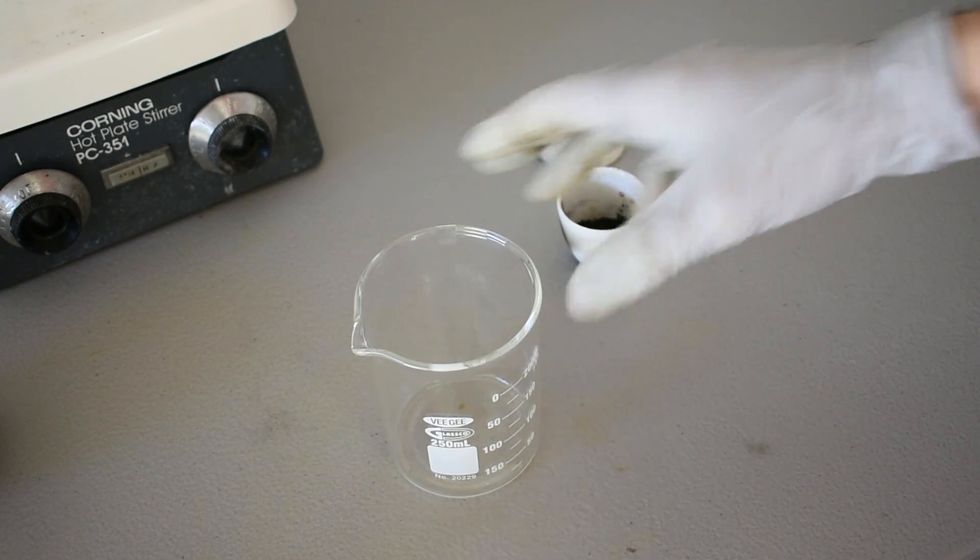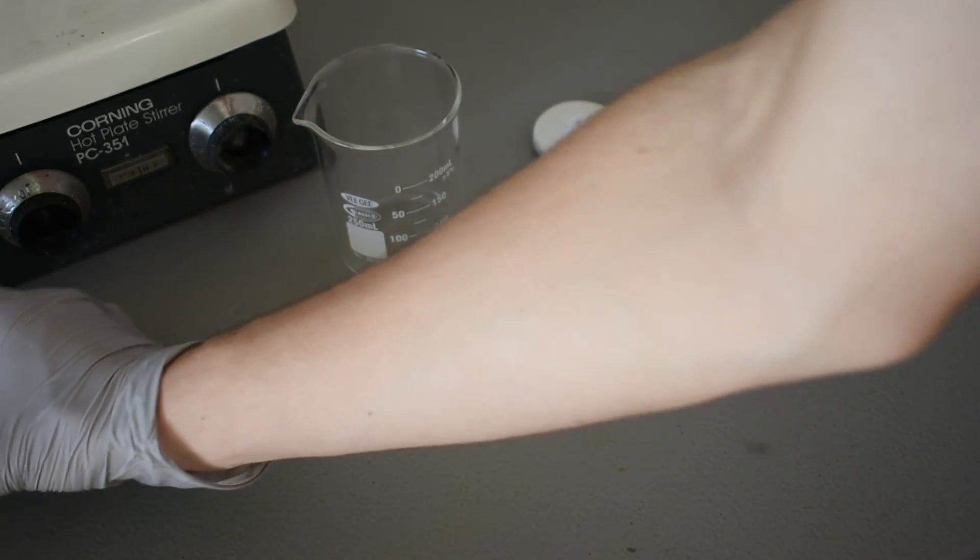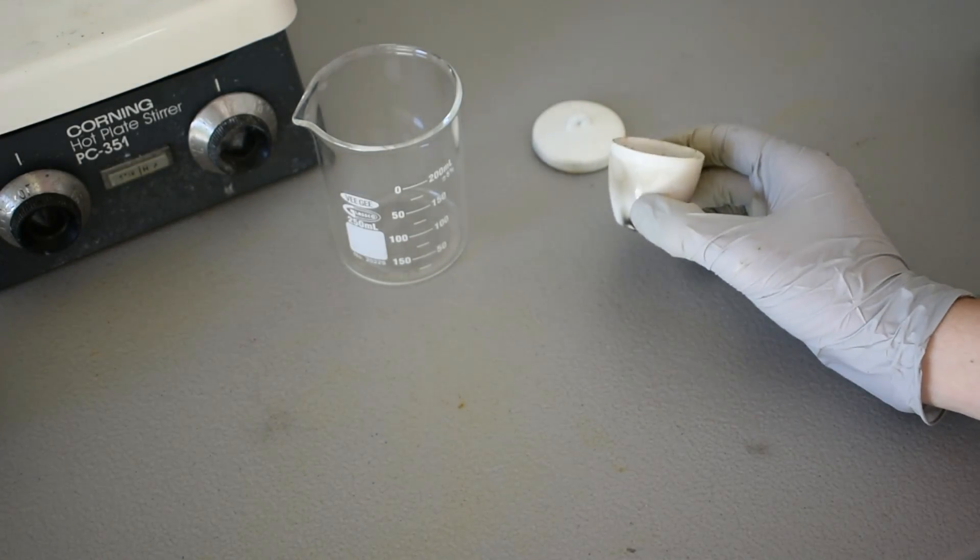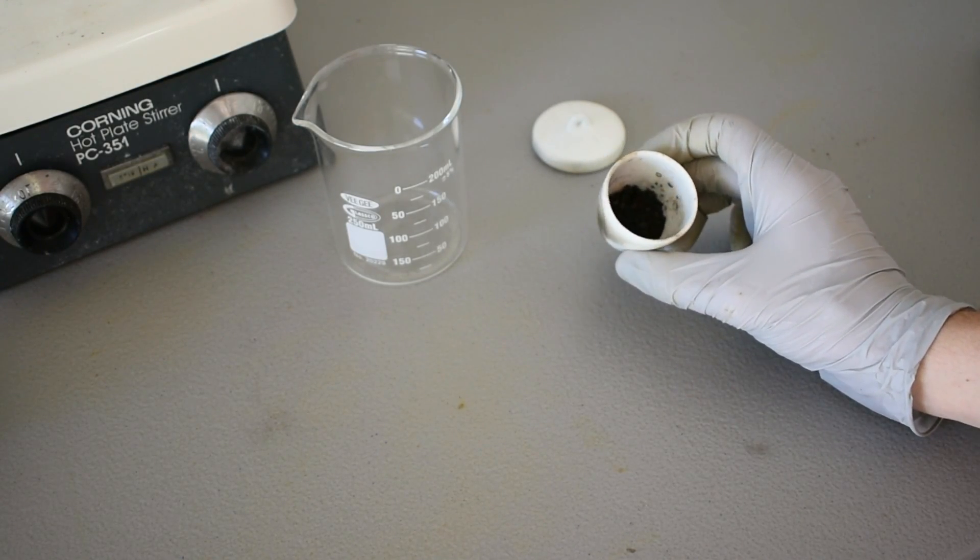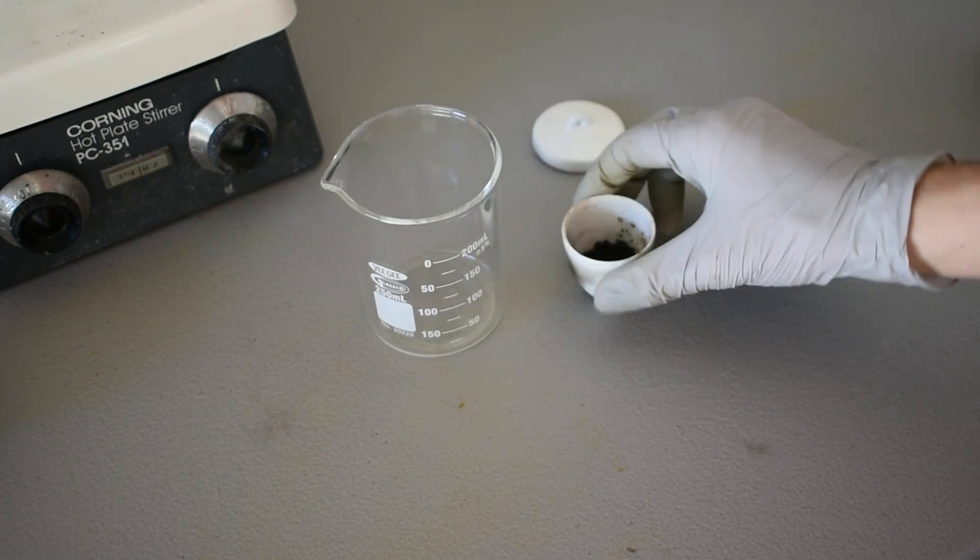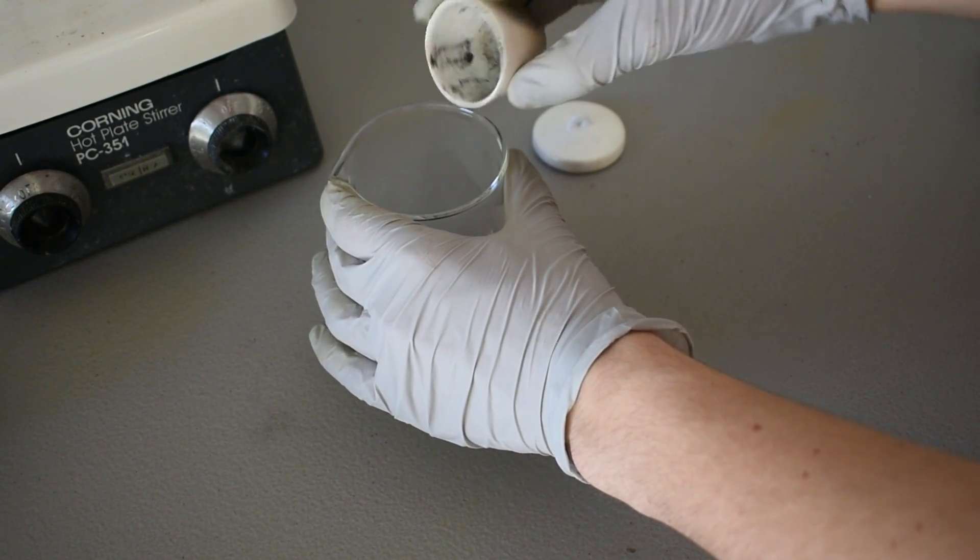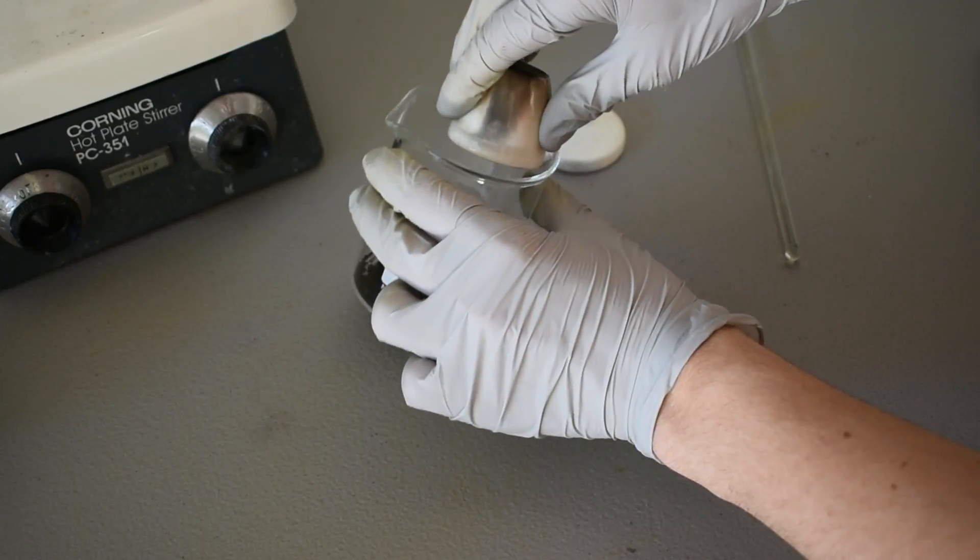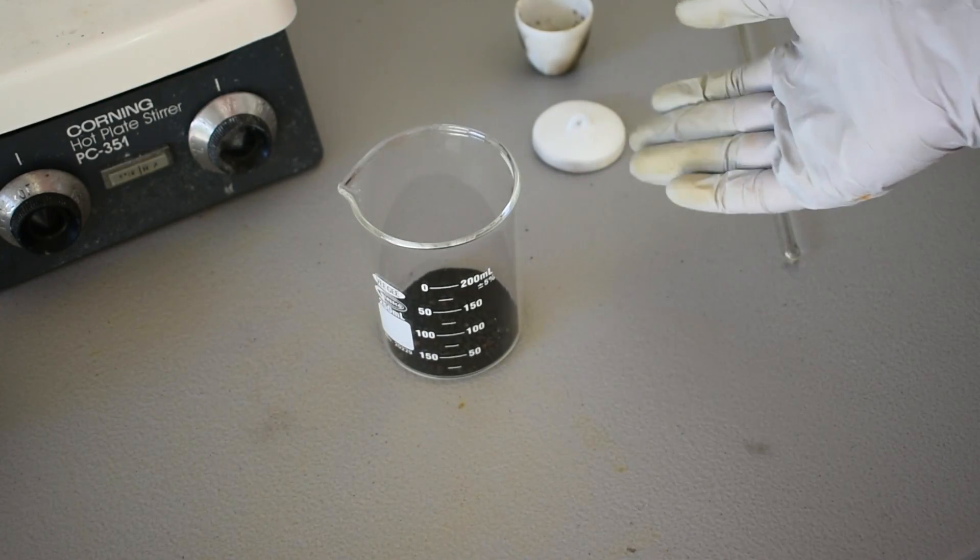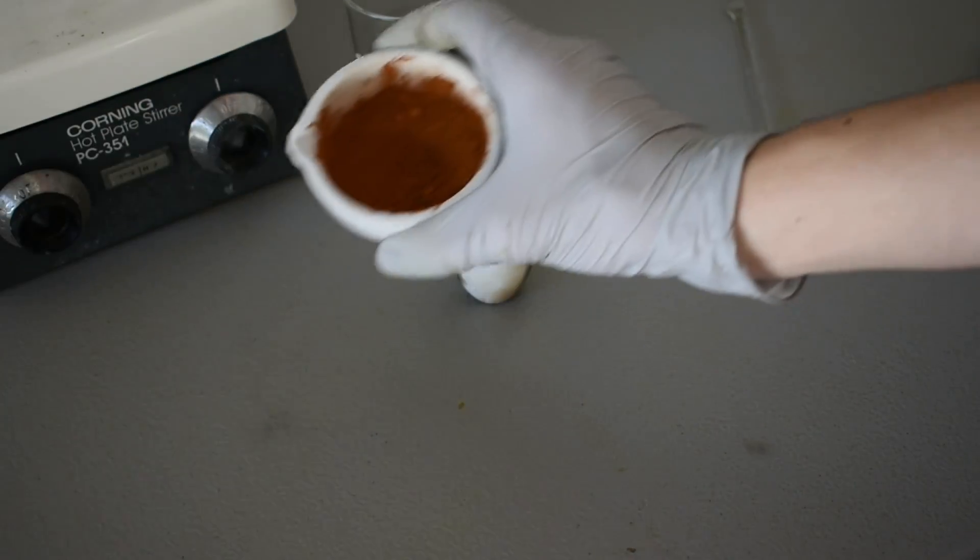Alright, so we're back in the lab. I have our cooled down crucible with our product. It's still a little warm, but it doesn't matter. And while it was cooling, I crushed up the other batch. So now the next step is to rinse our catalyst of any impurities using acetic acid. And I'm going to do that in this beaker. So I'm going to take our catalyst, pour it in. And I'm not going to rinse it yet. I'll rinse everything at once. So now we can load our next batch into the crucible.